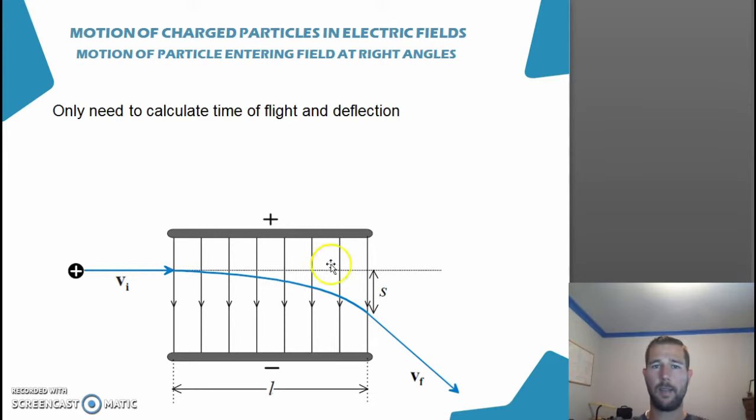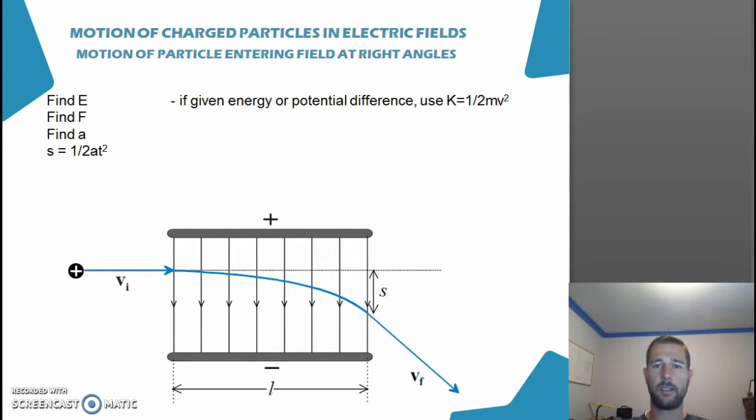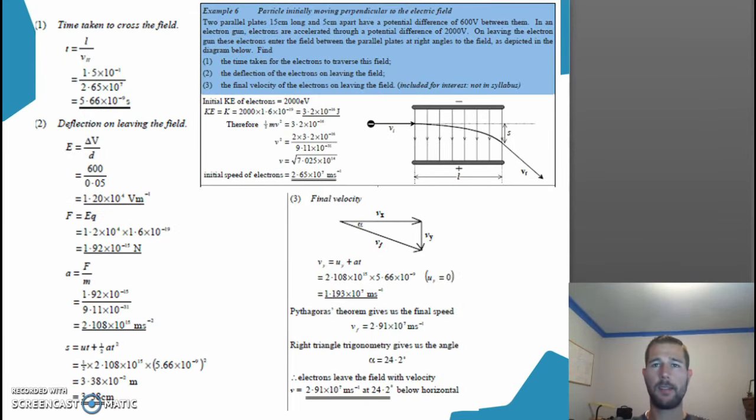In stage two physics the only thing that we need to calculate is the time of flight, so how long it takes for the particle to get from here to here, and also the deflection, this s value here. Time taken is the distance over velocity, and this is actually a simplified version of the range equation where acceleration in horizontal direction is zero. To find the deflection we have to find our acceleration. This is also a simplified version of the range equation where our initial velocity v naught is zero. This is an example question here which you can follow through.